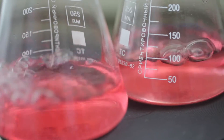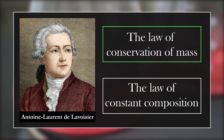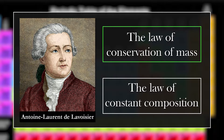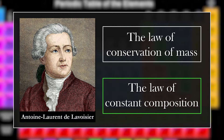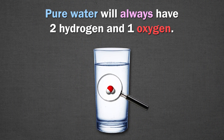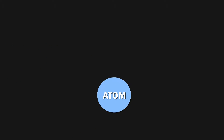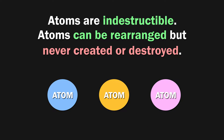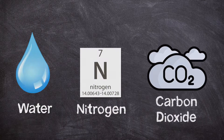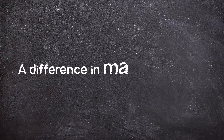Dalton worked from a chemistry perspective, building upon Lavoisier's law of conservation of mass and law of constant composition — the former stating that matter cannot be created or destroyed in chemical reactions, and the latter stating that all samples of a particular compound will be made up of the same elements in the same proportion or ratio. An example being that water will always have two hydrogen and one oxygen, a 2 to 1 ratio. Dalton specified that atoms of different elements vary in mass and size, and that atoms are indestructible so they can be rearranged but never created or destroyed. His proof was found in an experiment with water, nitrogen, and carbon dioxide — water absorbed CO2 better than nitrogen, and he suspected this was because of a difference in mass and shape.